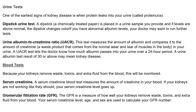You have blood tests — because your kidneys remove waste, toxins, and extra fluids from the blood, these are monitored. You have serum creatinine, which measures the amount of creatinine in your blood. If your kidneys are not functioning properly, creatinine levels go up. Normal levels depend on your gender, age, and muscle mass. You also have the glomerular filtration rate, which measures how well your kidneys remove waste, toxins, and extra fluid. Your serum creatinine level, age, and gender are used to calculate your GFR number. A normal GFR depends on your age and sex. If your GFR is low, your kidneys are not functioning as they should, and as kidney disease progresses, your GFR goes down.